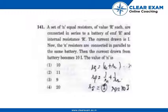In series grouping, the equivalent resistance R_series is n times R. And in parallel grouping, the equivalent resistance R_parallel is R by n.